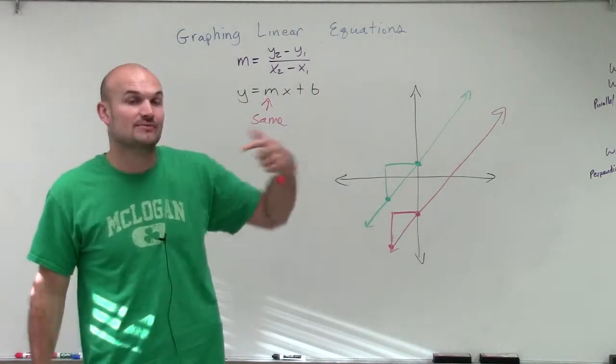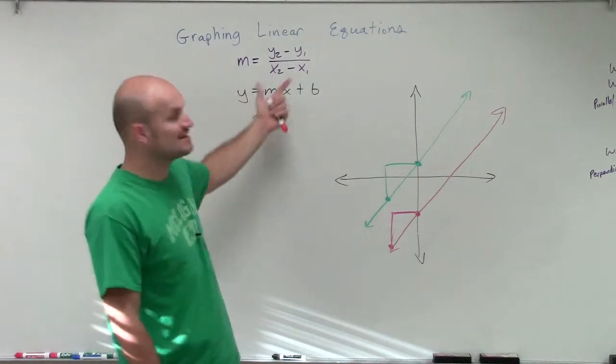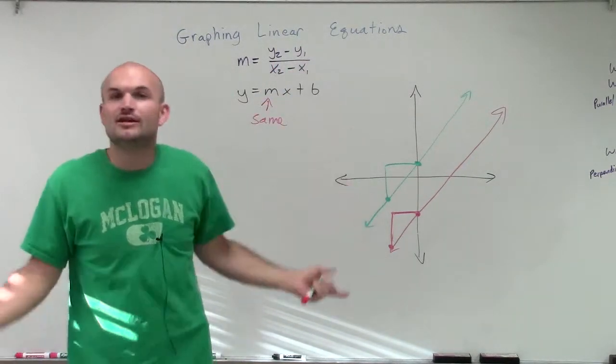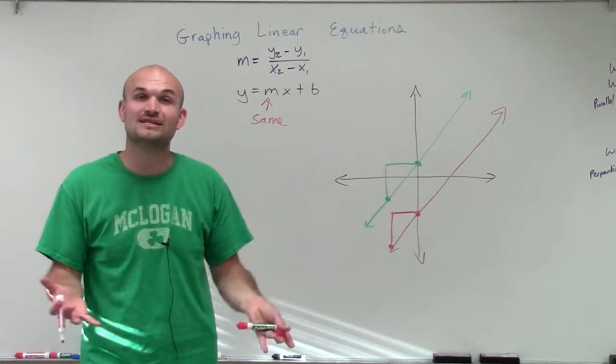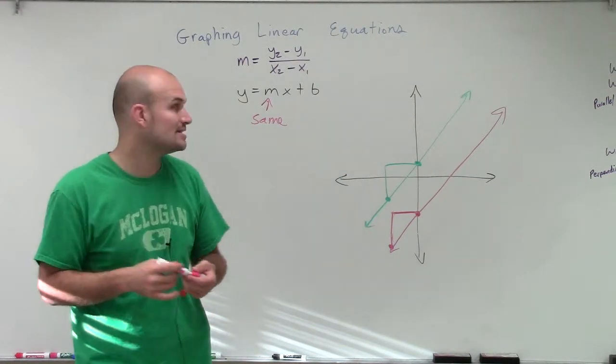And the y-intercepts are going to be different. Because if the slopes are the same and the y-intercepts are the same, then you'd have exactly the same line. So the y-intercepts have to be different. However, the slopes will be the same.